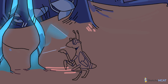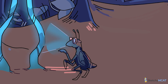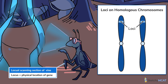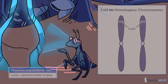Locus means the location on a chromosome where a specific gene is found, and the plural of locus is loci. Loci are often represented as bands on a chromosome. This giant space locus is wearing some nifty scanning glasses that are illuminating a region of the vines — a locus.